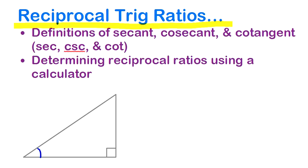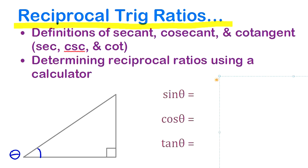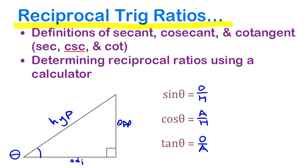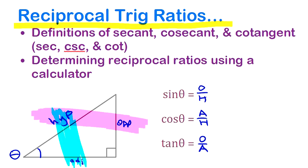When you first learned about right triangle trig, if this was an angle theta, you learned to write the basic three ratios: sine, cosine, and tangent. You labeled the triangle with opposite and adjacent beside the angle, and the hypotenuse as the longest side. Sine was opposite over hypotenuse, cosine was adjacent over hypotenuse, and tangent was opposite over adjacent. There are three pairs of sides, which is why there are three basic trig ratios.